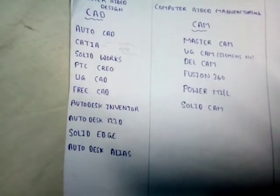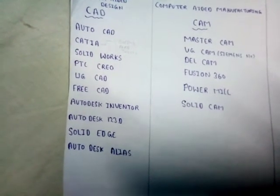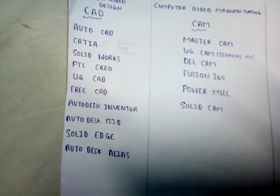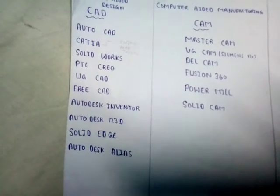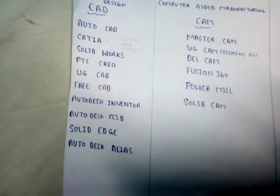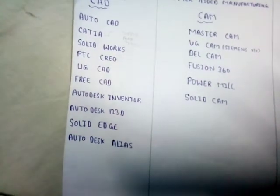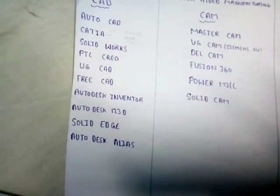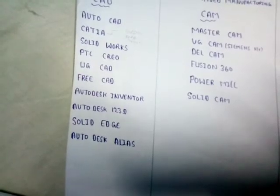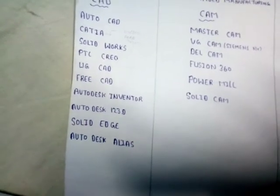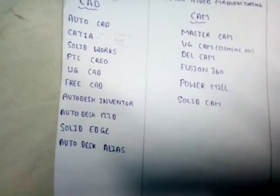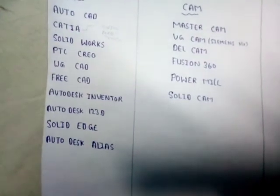In design, we are going to design 3D or 2D models. Basically, AutoCAD is preferable for two-dimensional work, CATIA is specially for surface design, and SOLIDWORKS is for solid modeling.